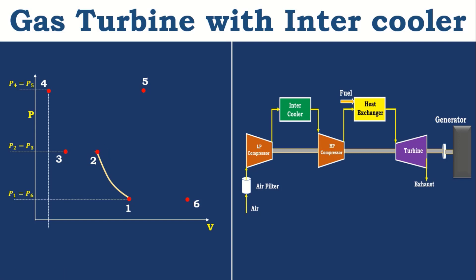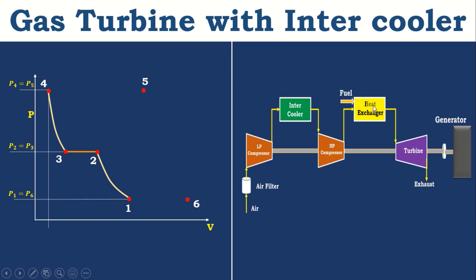After that, it passes to the intercooler where we remove the temperature of air. Since it is an open system, it maintains constant pressure. That is why we call it constant pressure heat rejection in the intercooler. Then it passes to the high pressure compressor where the air is compressed isentropically — pressure and temperature increase but entropy remains constant. After that, the air passes to the combustion chamber where we add fuel and increase the temperature of air at constant pressure. It maintains constant pressure because it operates as an open system. That is why we call it constant pressure heat addition in the combustion chamber.